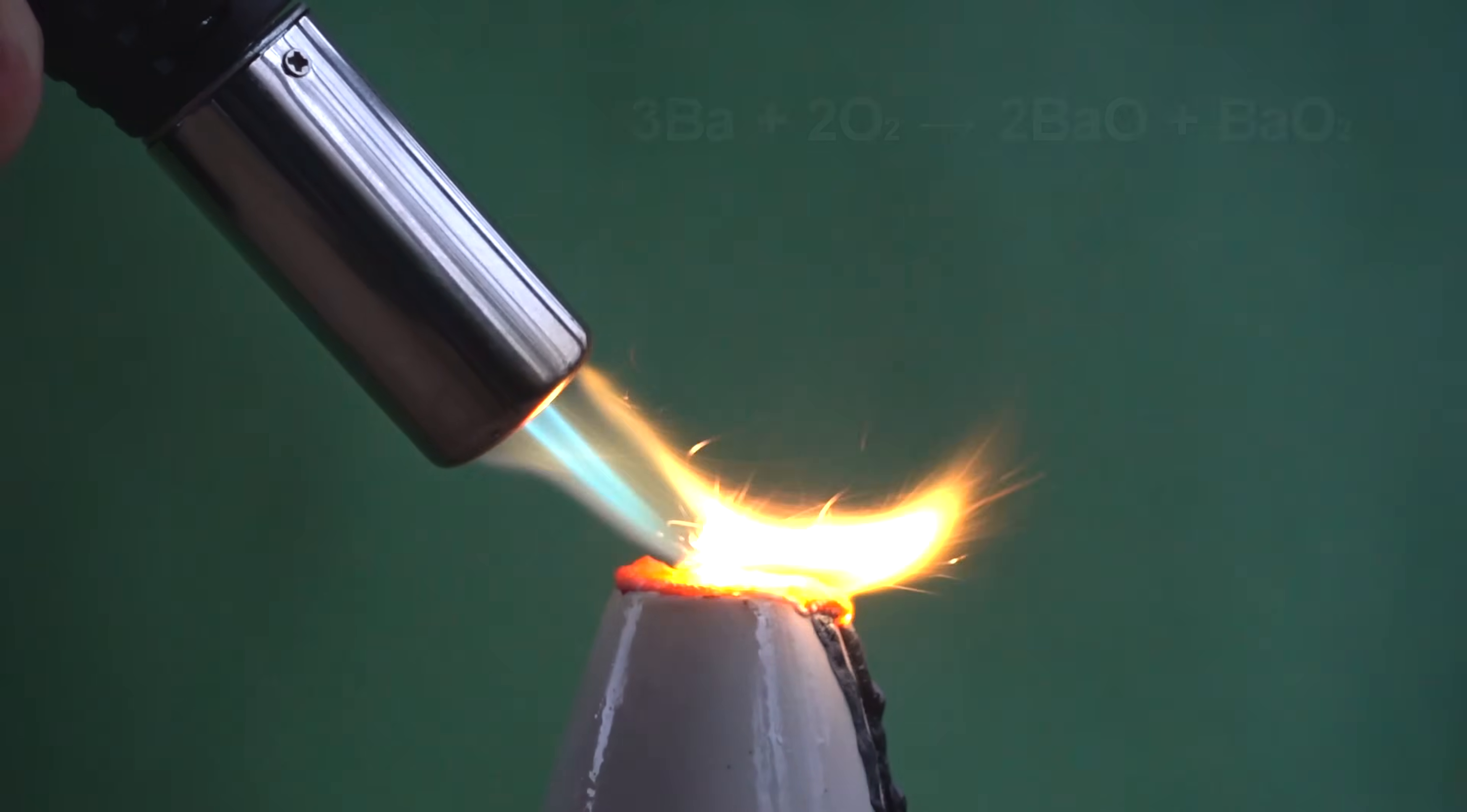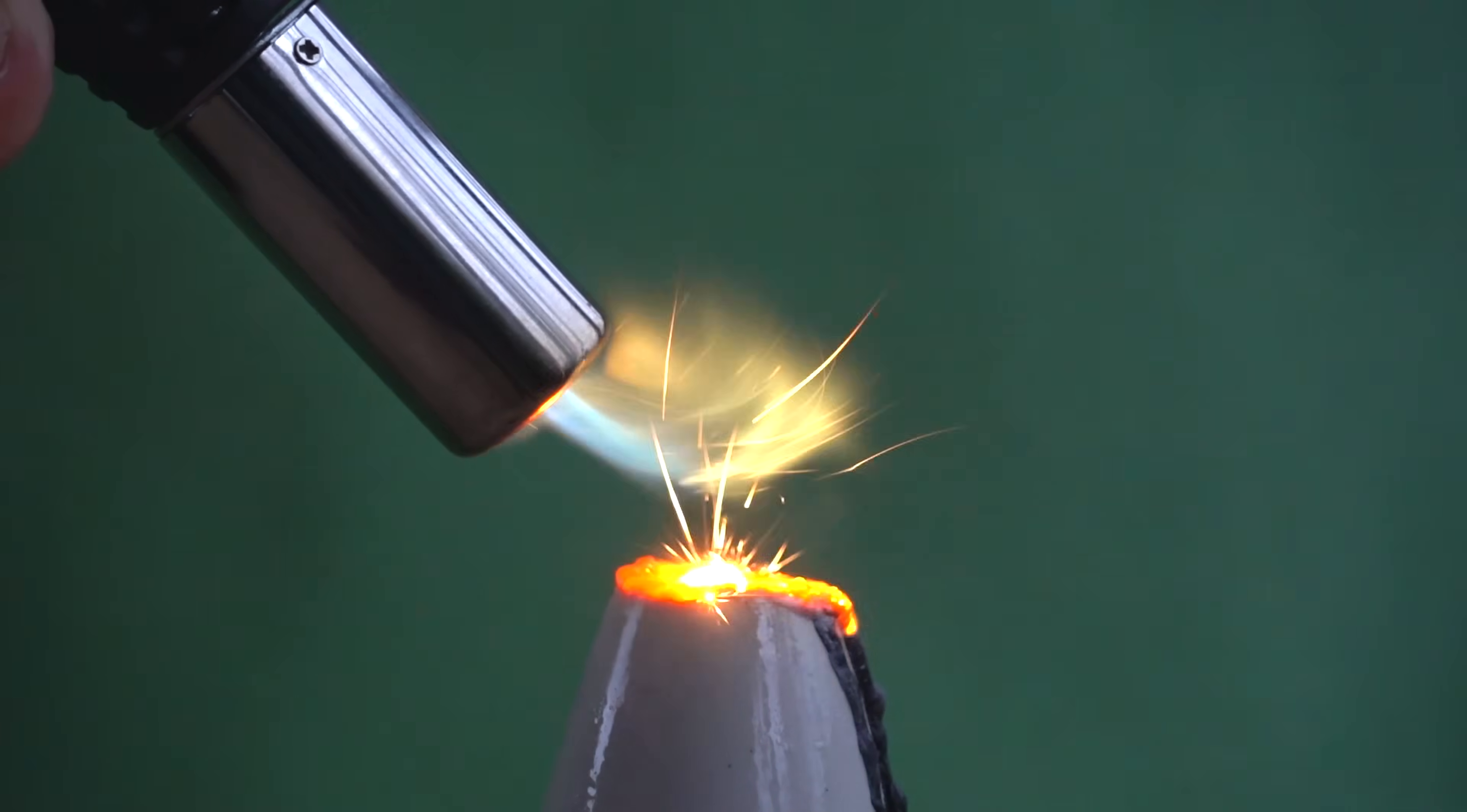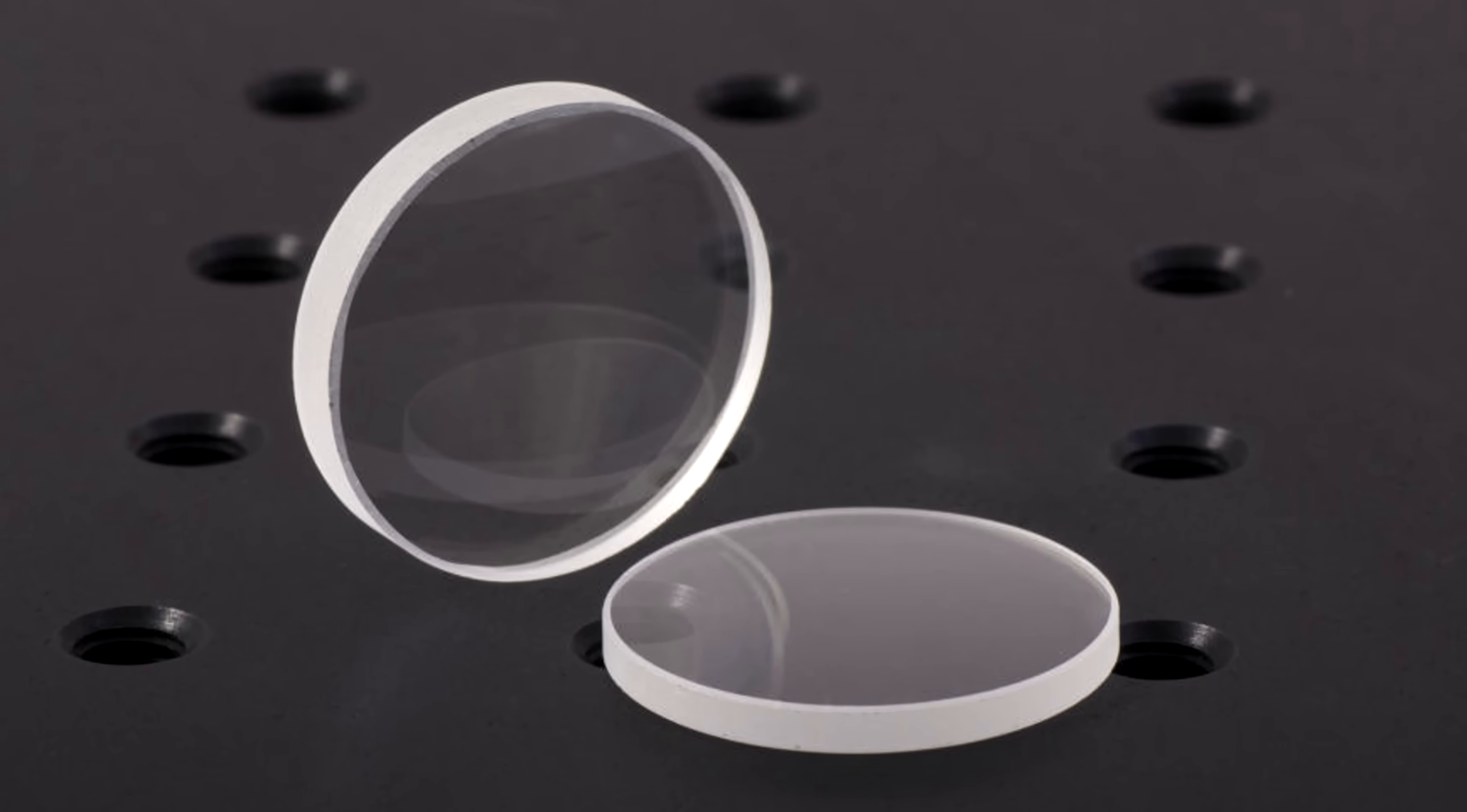As a result of barium burning in air, we get barium oxide. This oxide is used to create high-temperature superconducting ceramics, as well as an additive in specialty-grown glass with low refractive index.